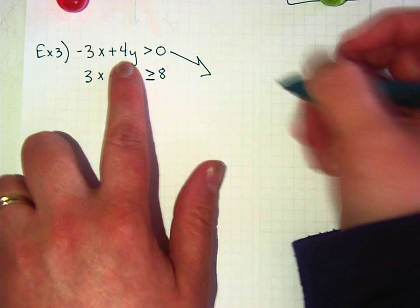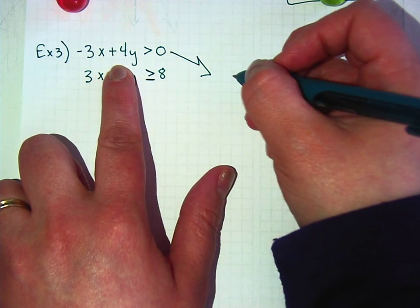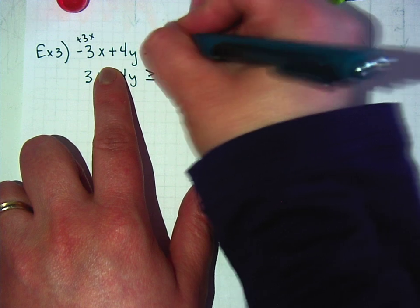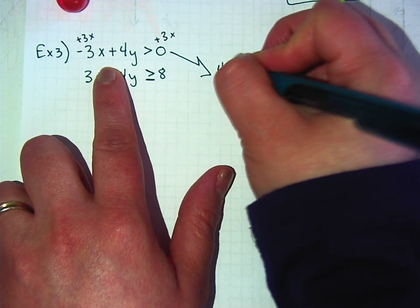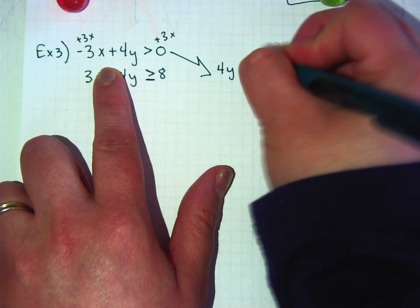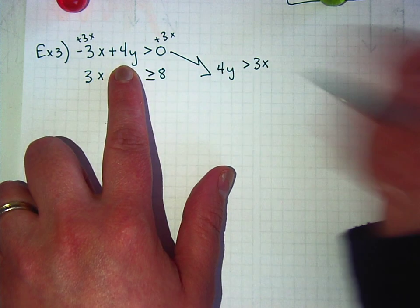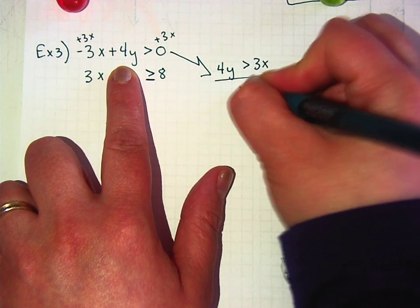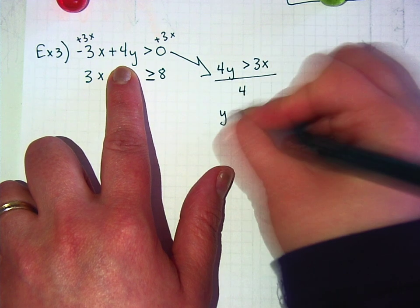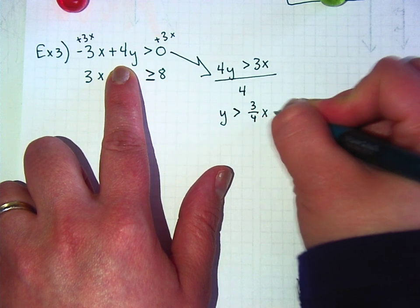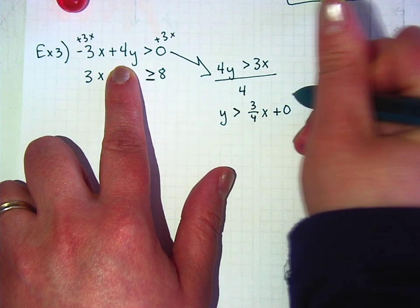I'm going to do this one first. What should I do first? Add 3x. So I've got 4y is greater than 3x. And then divide by 4. So y is greater than 3 fourths x, and then I'm going to write plus 0 to make it easy to graph.